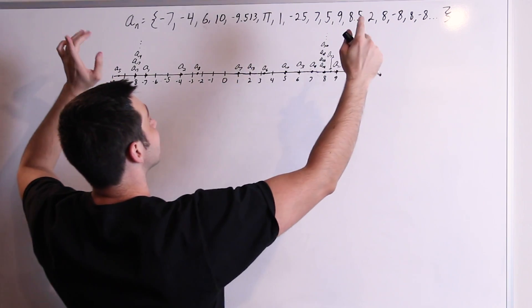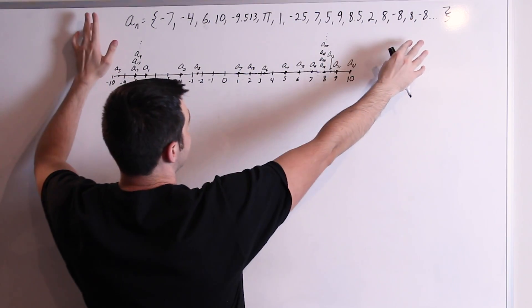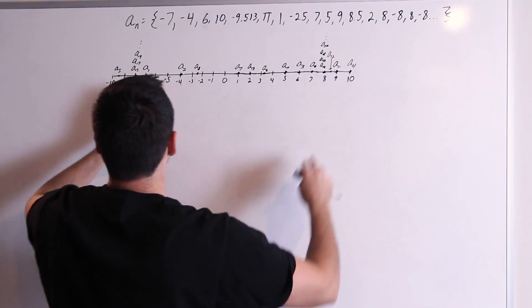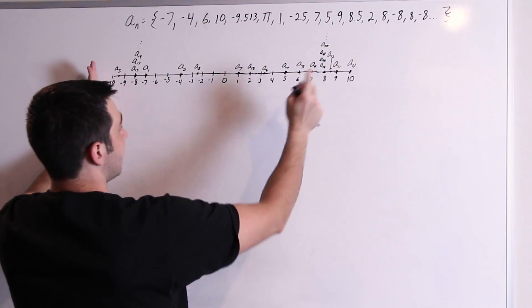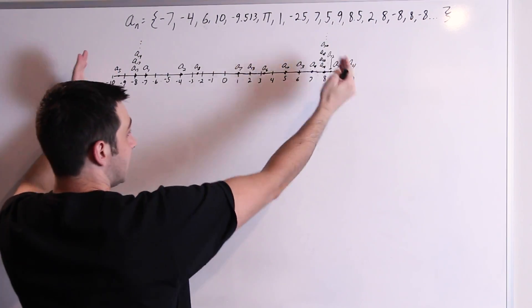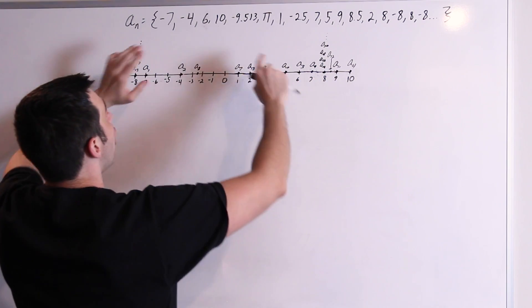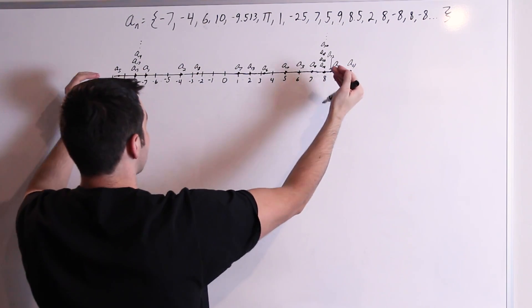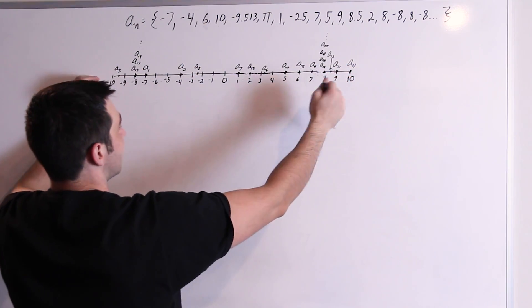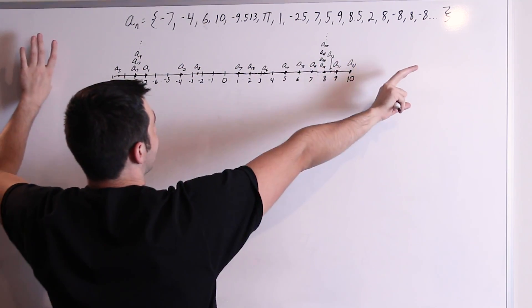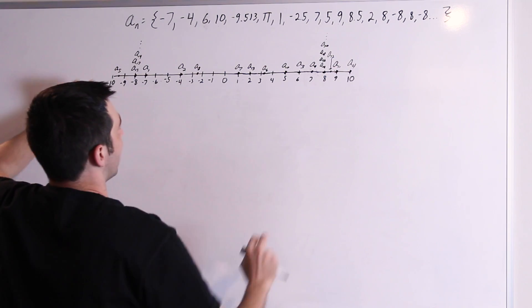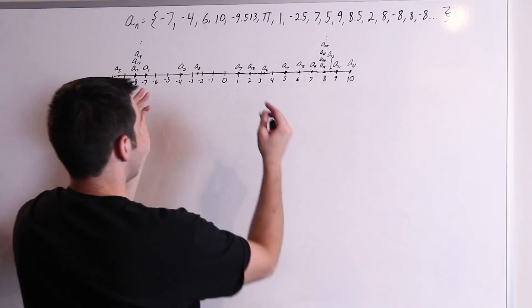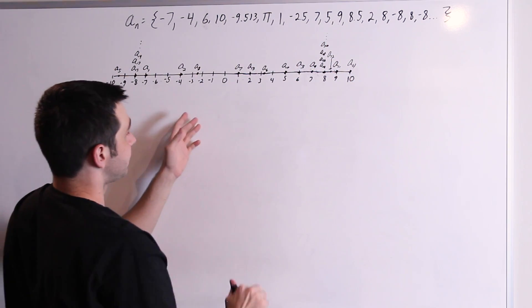But the sequence has to be bounded. Our sequence is bounded between negative 10 and 10, inclusive. All these numbers lie in this interval, including the endpoints, nothing outside of it. So other than that, you can pick any real numbers you want, as long as they lie in your bounds.